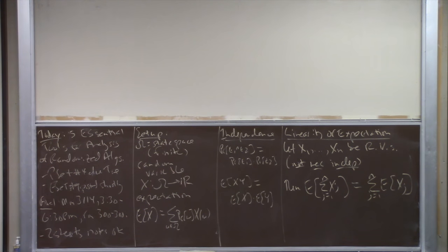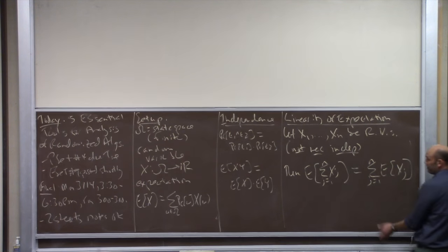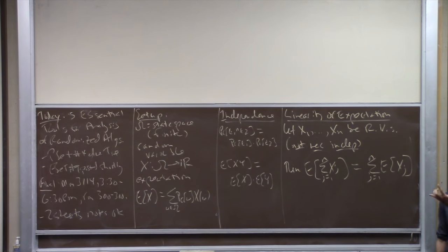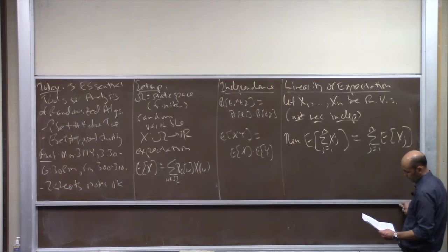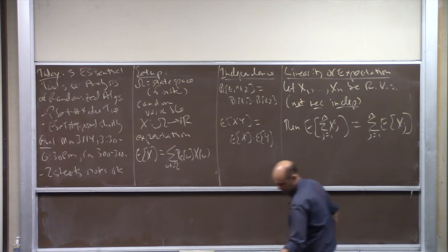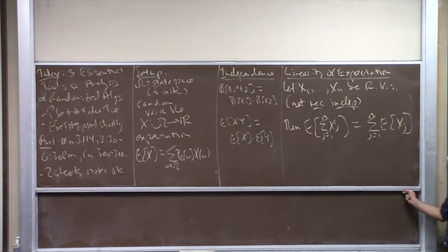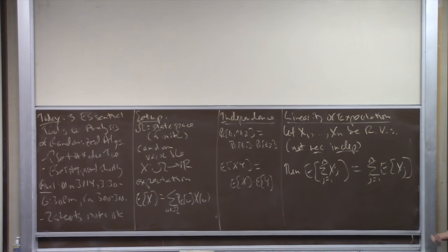When I teach CS 161, I give 20 lectures and put a box around exactly one thing the entire quarter — and this is it. The bang per buck, how easy it is versus how useful it is, is off the charts. The proof is trivial: you expand the expectations into sums and reverse the order of the double summation. The key thing to remember: the random variables need not be independent.